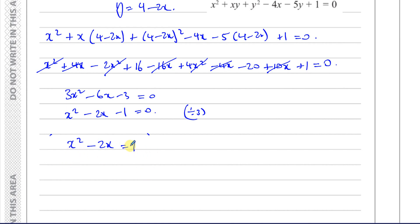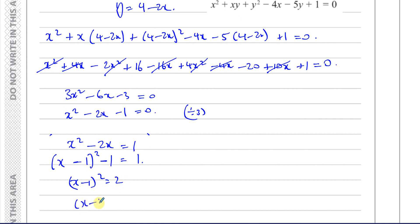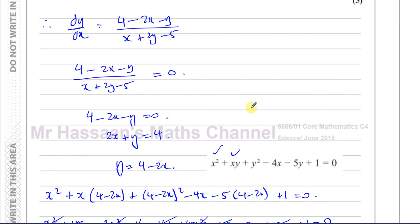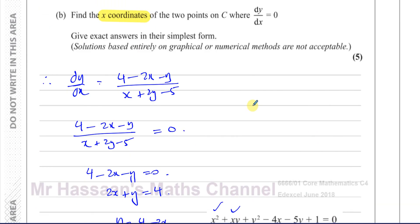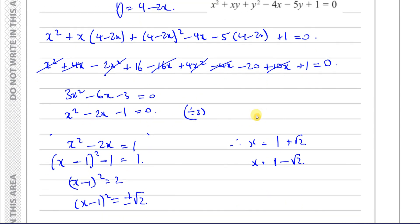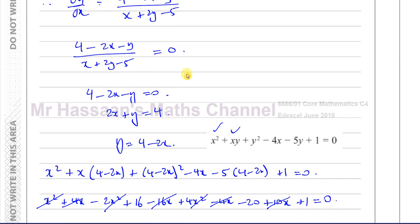So x = 1 + √2 or x = 1 − √2 — those are the two values of x for which the gradient equals 0. That concludes question 2B.